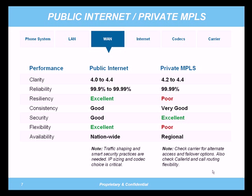A few things to note: on the public internet side, pay special attention to traffic shaping, smart security practices, and the sizing of your IP circuit and codec choice. On the private MPLS side, check that the carrier has alternate access and failover options — not just forwarding your main number to a cell phone, which isn't real resilience. Resilience means being able to operate at your normal capacity even in a failover scenario. Also check if they have the ability to route caller ID and calls to multiple locations, even if that location is separate from where your 911 is registered.